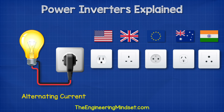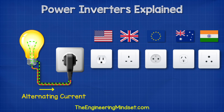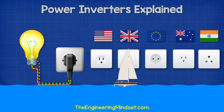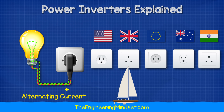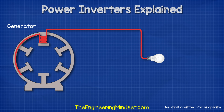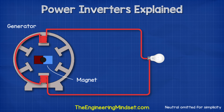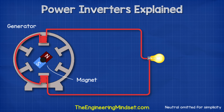With AC electricity, the electrons alternate by flowing forwards and backwards constantly — that's how it gets its name, because the current of electrons alternates in direction. You can think of this type of electricity like the tide of the sea; it constantly flows in and out between the maximums of high tide and low tide. If we followed the copper wires back to the generator, the wires are connected to some coils of wire which sit within the generator. Inside a basic generator, we also find a magnet at the center which is rotating. The magnet has a north and south pole, or you can think of it as a positive and a negative half.